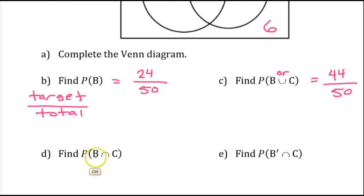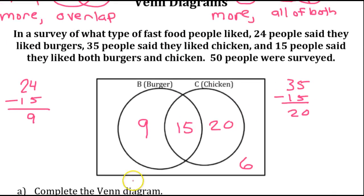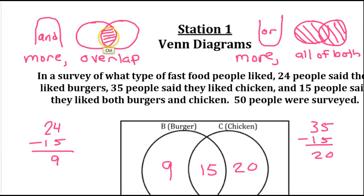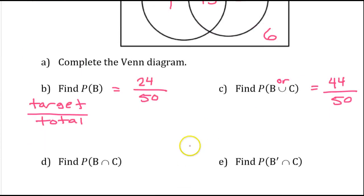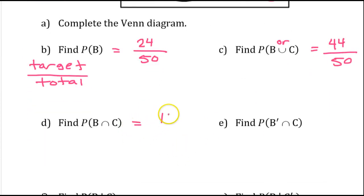This is the probability of B and C. Well, B and C is going to be the overlapping part, which is 15. So, that's why we're going to have 15. It's probability. So, it's going to be a fraction. 15 out of a total of 50.